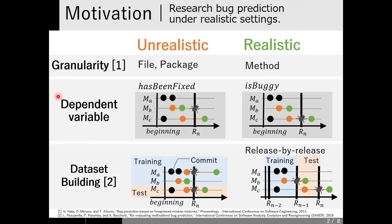Second, dependent variable. In some papers, whether the module has been fixed is used as a dependent variable. They are interesting from the viewpoint of computer science, but they are not practical for bug prediction models, because has-been-fixed cannot capture buggy modules correctly. So we adapt is-buggy as the realistic dependent variable.